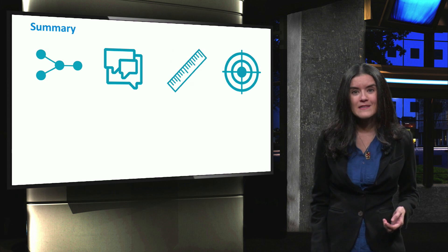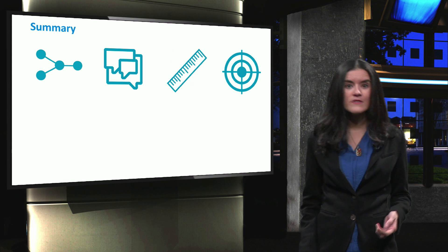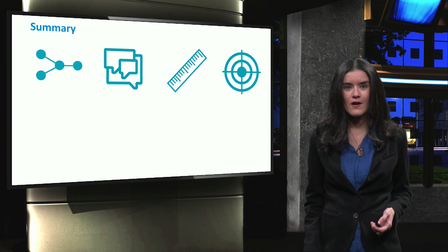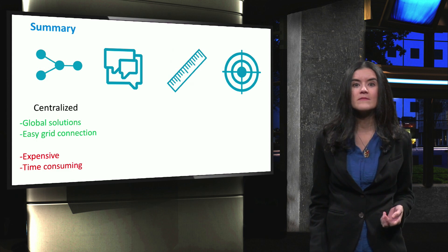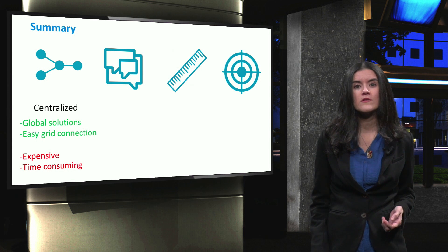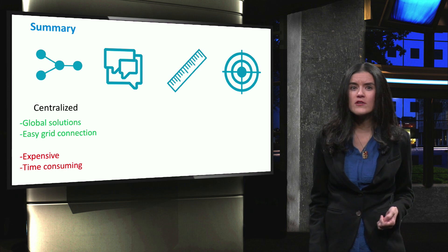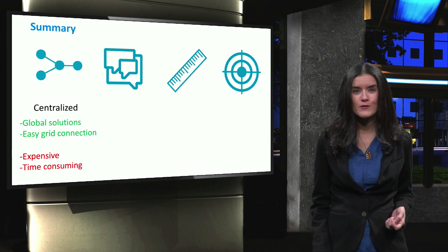Finally, we discussed some of the main advantages and disadvantages of each control architecture. On the other hand, centralized schemes have the advantages of having global optimal solutions. However, they are computationally expensive and very time-consuming.